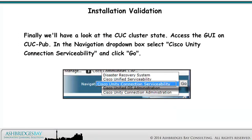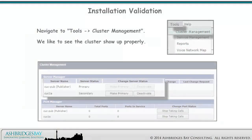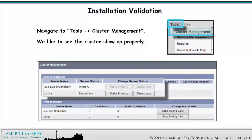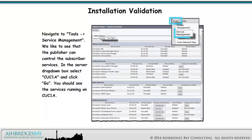Finally, we'll have a look at the CUC cluster state. Access the GUI on CUC Pub. In the Navigation drop-down box, select Cisco Unity Connection Serviceability and click Go. Navigate to Tools > Cluster Management — we like to see the cluster show up properly. Then navigate to Tools > Service Management. We like to see that the publisher can control the subscriber services. In the Server drop-down box, select CUC1A and click Go. You should see the services running on CUC1A.